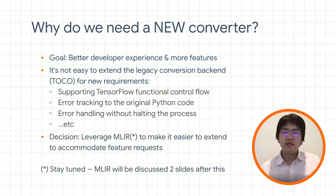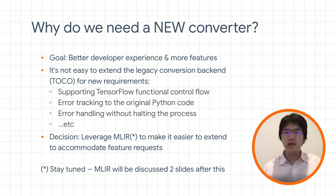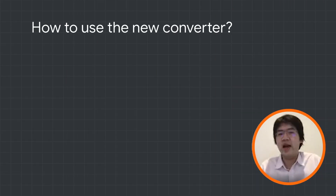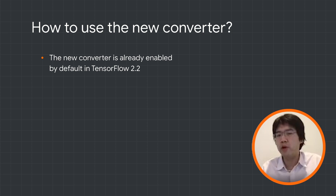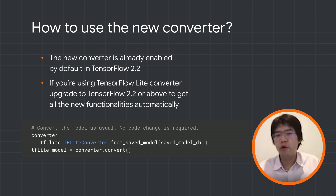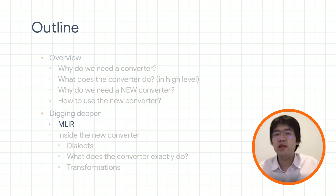We assessed many options — improving the existing code, writing a new one, or leveraging other things in TensorFlow. We found the problem we're dealing with is really similar to a compiler: we're trying to load a program, do some transformation and optimization, and produce another program in another format. Our decision was to leverage the MLIR platform to make this easier to implement and utilize other features and code in the TensorFlow ecosystem. To use the new converter, just upgrade to TensorFlow 2.2 or above — it's a backend that's completely hidden from users.